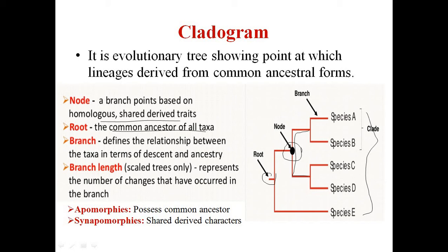Species E and the remaining species from the node arrive from this root — like the root of a plant from which all parts develop. The third important element of a cladogram is the branch, which shows the relationship between taxa in terms of descent and ancestry. Branch length, used only for scale, represents the number of character state changes.